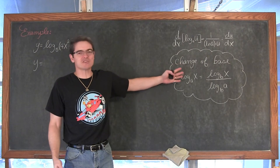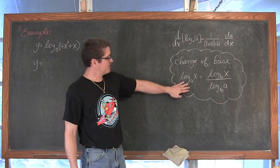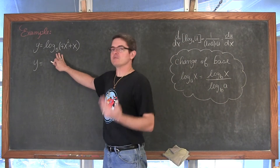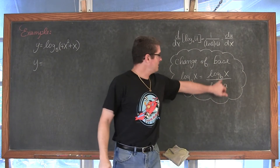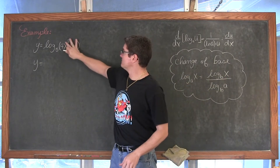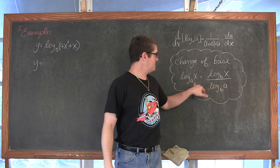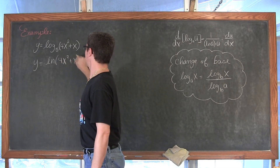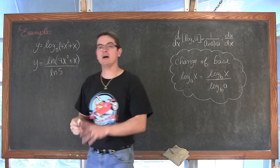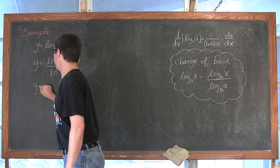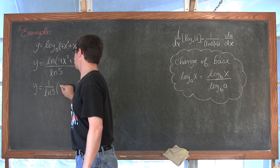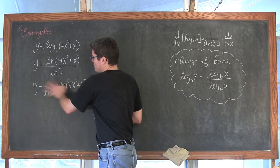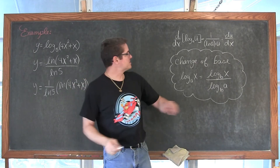Here is the change of base formula — what I just showed you how to derive — just having the formula for your notes. We have a log base 5, and I am going to convert to natural log or log base e. The expression you are taking the log of goes in the numerator and the old base ends up in the denominator. So we are going to have y equals the natural log of 4x squared plus x over the natural log of 5, or equivalently, 1 over the natural log of 5 times the natural log of 4x squared plus x.